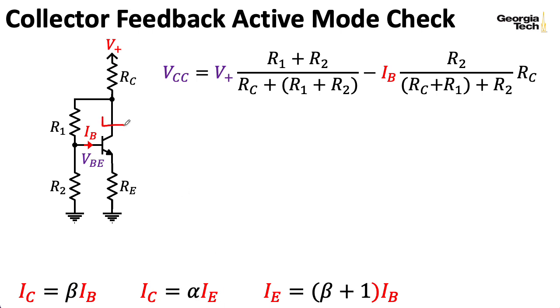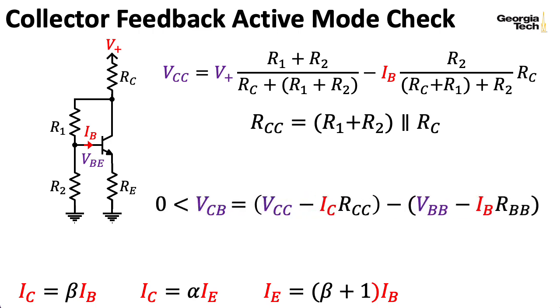Okay, so what about the Thevenin resistance looking out of the collector? Well, that's pretty easy to compute. I'll just have RC in parallel with R1 plus R2. Because remember, when we're computing a Thevenin resistance, we zero out the independent sources. So this would look like ground, and this is disconnected entirely here. To zero a current source, you make it an open circuit. So you can then take those various quantities, plug them into these expressions, and make sure you get a number that's positive.